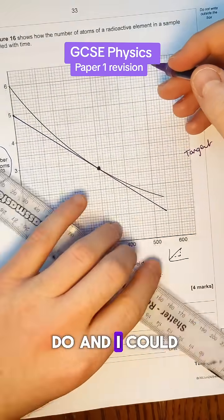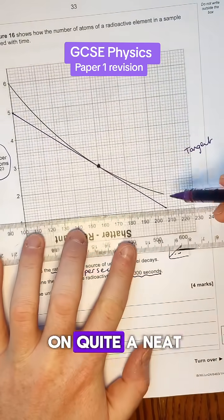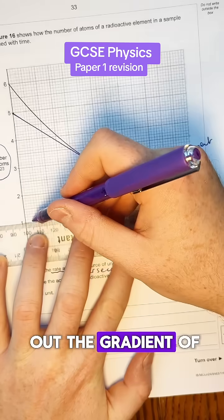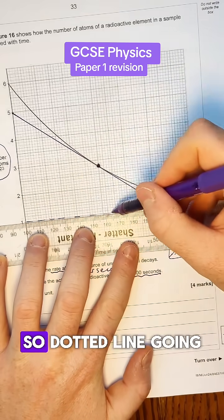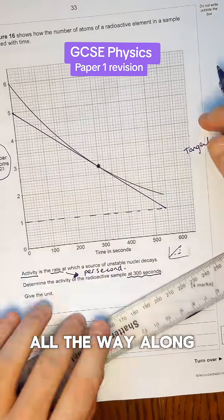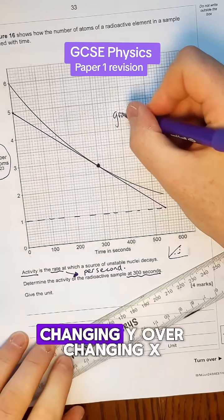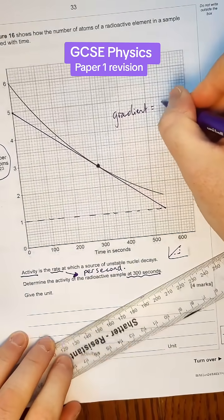Alright next I'm going to do and I could go down to the bottom there but actually it stopped on quite a neat line here so I'm going to work out the gradient of this line that I've just drawn. So dotted line going all the way along.